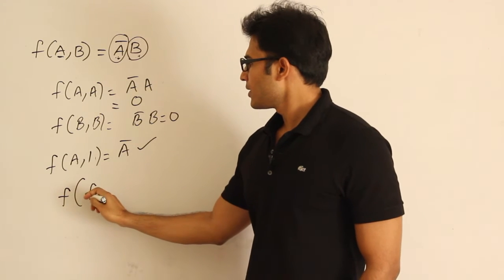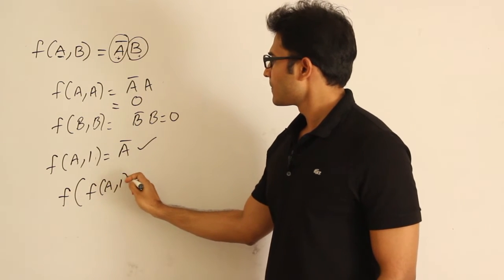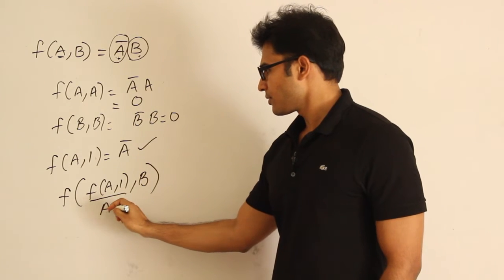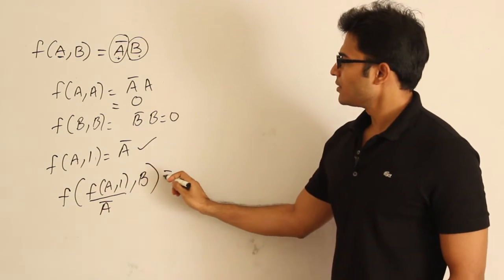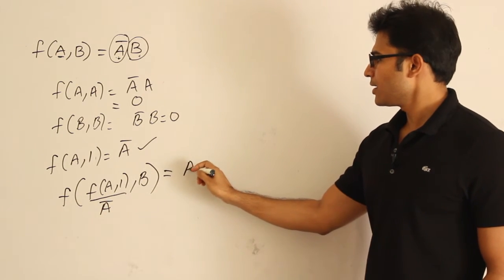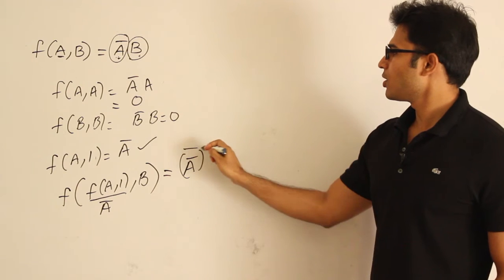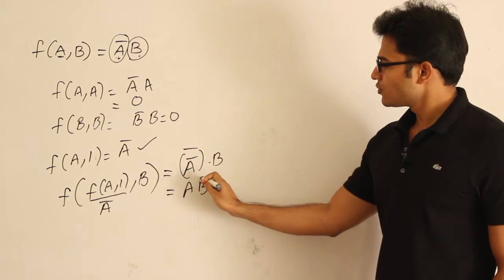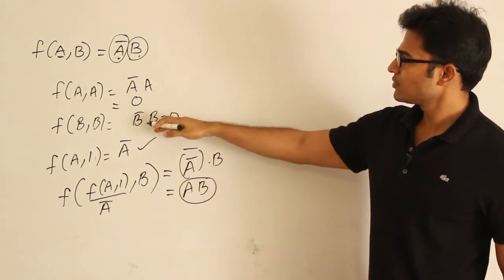Therefore f(f(a,1),b). It is nothing but already a complement, right? A complement comma b, which is nothing but a complement whole complement concatenated with b, which is simply ab. So I got AND as well as NOT.